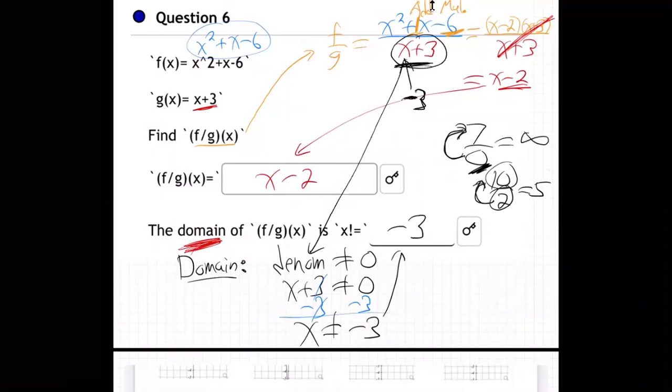Zero can go into 7 forever and not fill it up. Infinity. That's why we say does not exist, DNE, meaning a normal number answer doesn't exist. It's just infinity. So you can't have zero in the bottom of a fraction. It's infinity.